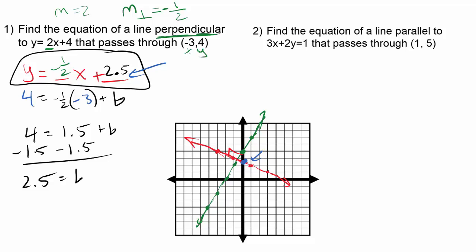All right, we're going to try one more here. So we're going to deal with parallel lines this time. And we'll also deal with a line that's not in slope-intercept form. So we're going to find the equation of a line parallel to 3x plus 2y equals 1 that passes through the point 1, 5. Fill in my x, my y here just to help me out.